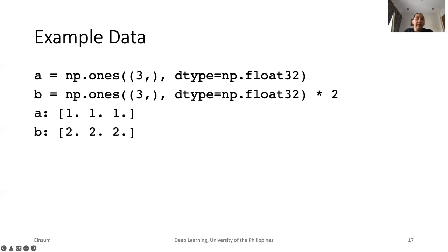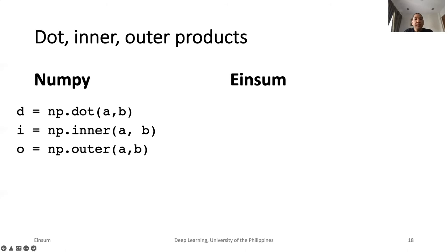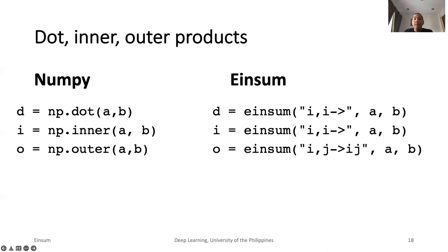Let us demonstrate vector operations. First, let us generate two vectors or 1D tensors. A tensor with all elements equal to 1 and another tensor with all elements equal to 2. Note that both are vectors of shape 3, which is different from the earlier example where we have X, which is a matrix with shape 3 by 1. In this slide, NumPy has to use three different function names to implement the dot, inner, and outer products. Meanwhile, in EinSum, we just use one function. Only the EinSum notation is changed.